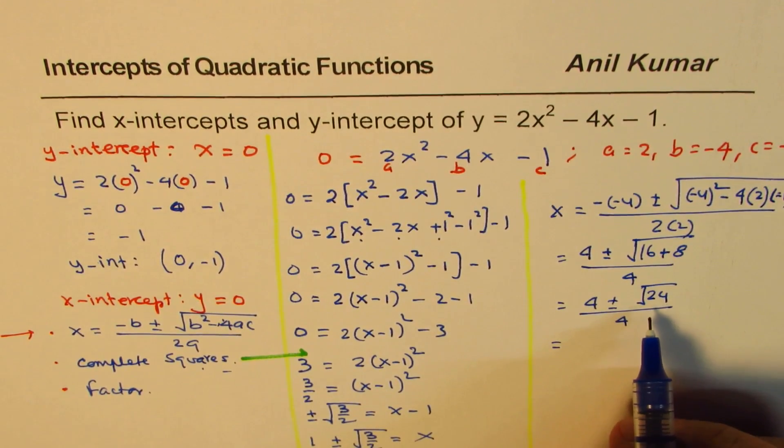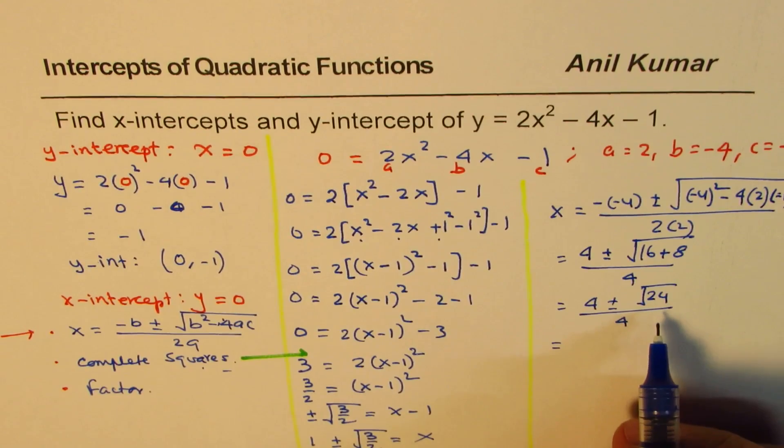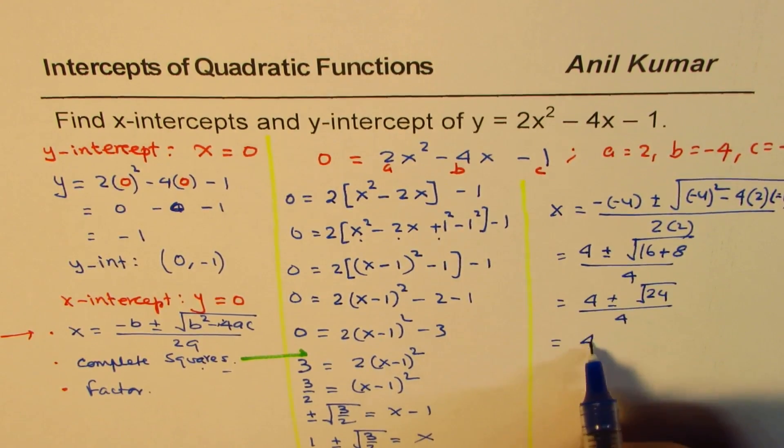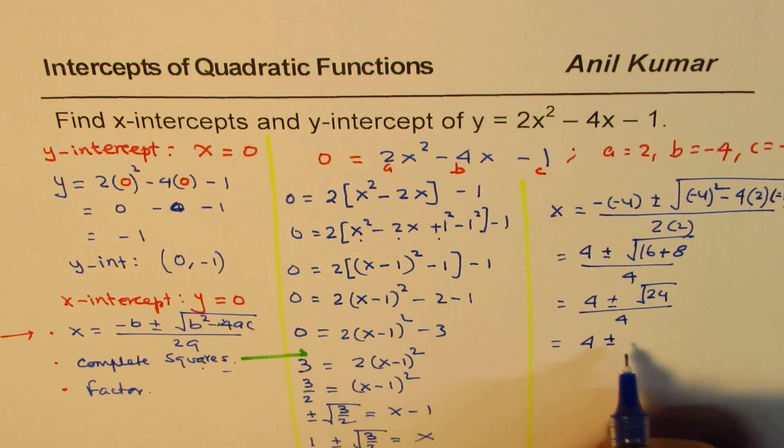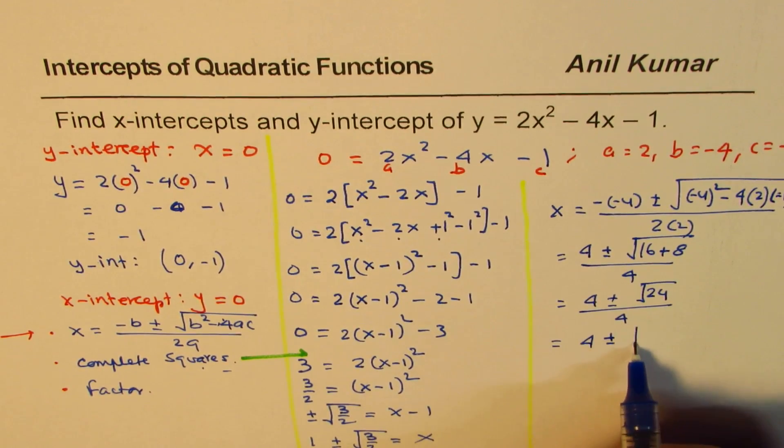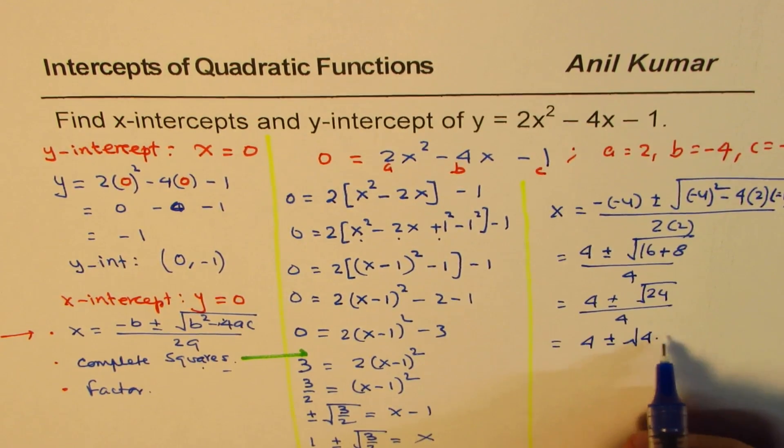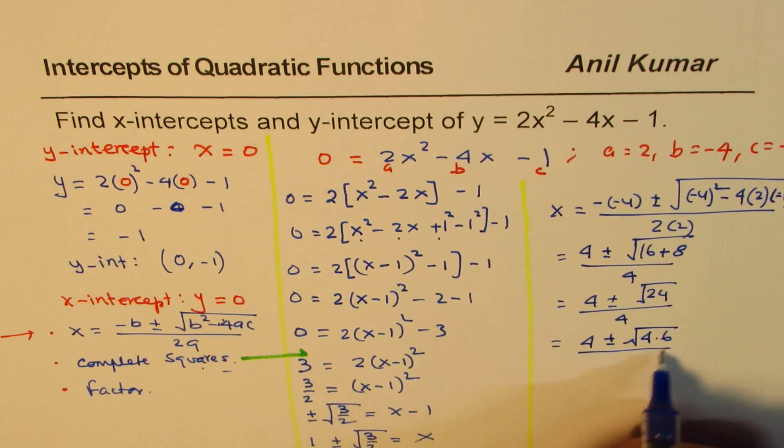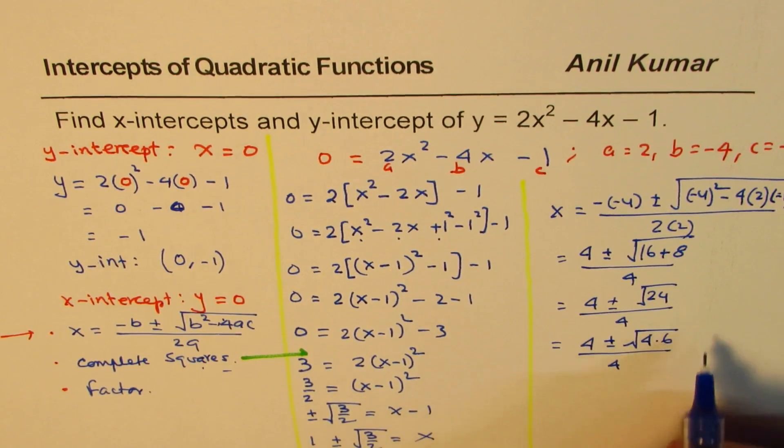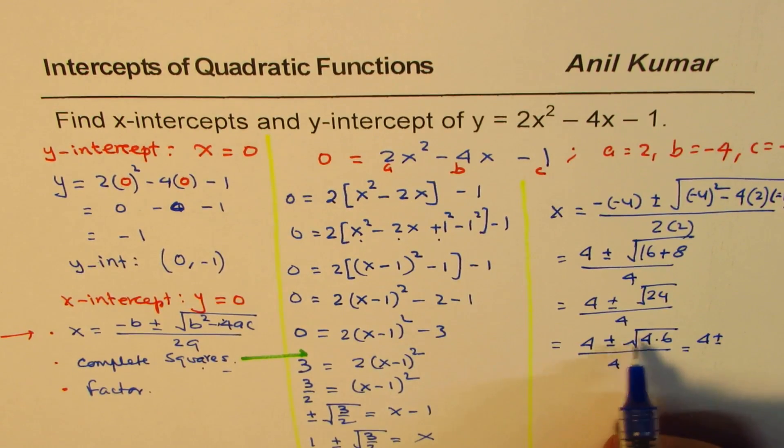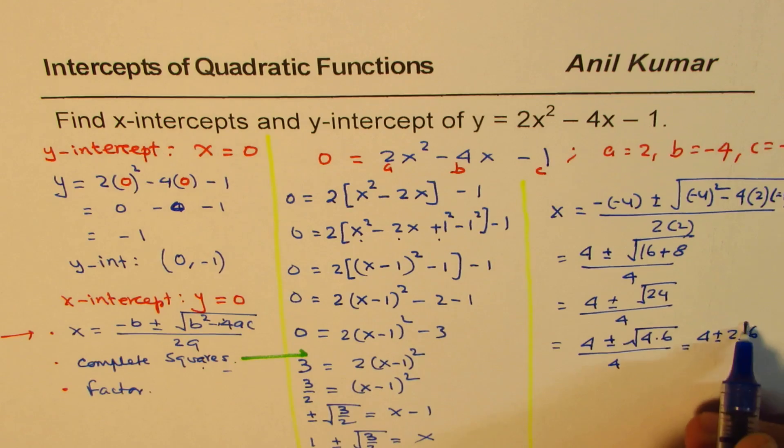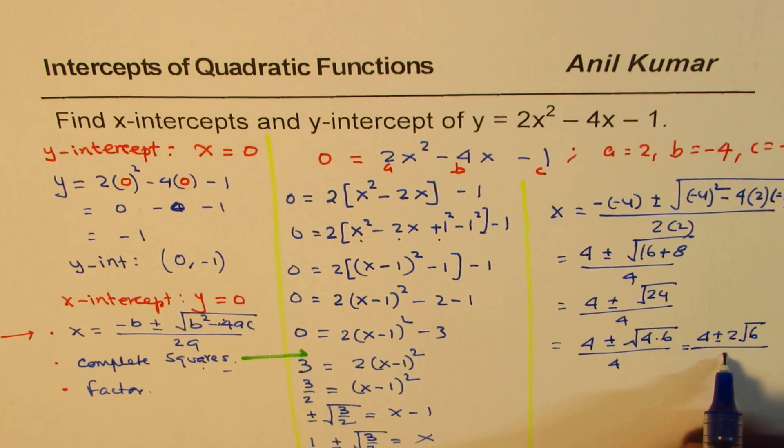Now 24 could be written as 4 times 6. So we could write this as 4 plus minus square root of, this is like 4 times 6. Let me write 4 times 6 first, over 4. So I am just adding a few steps, which could be written as 4 plus minus, 4 could be taken out, 2 square root of 6, over 4.